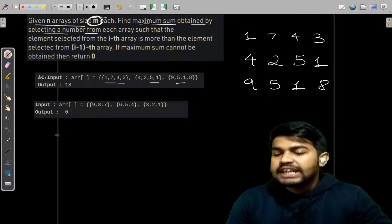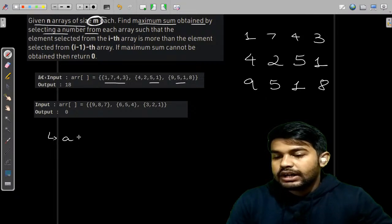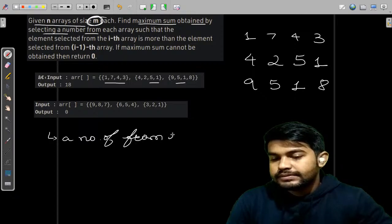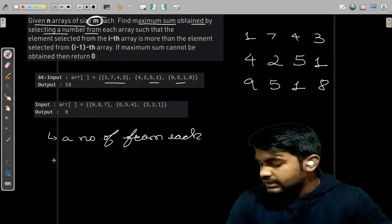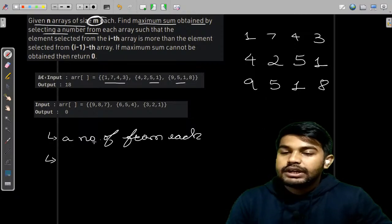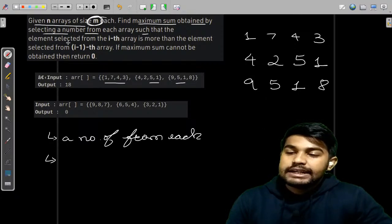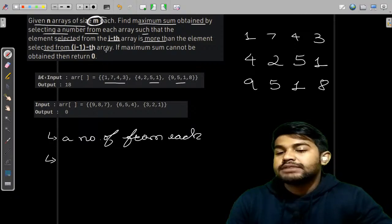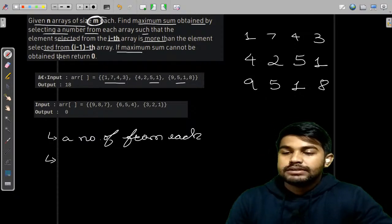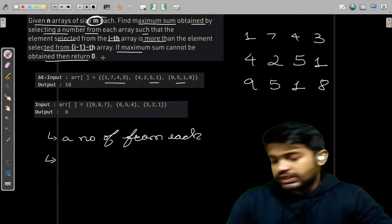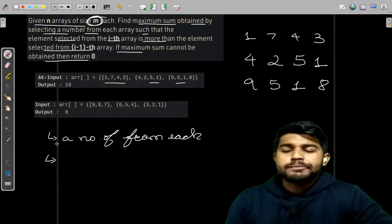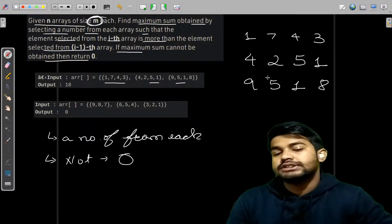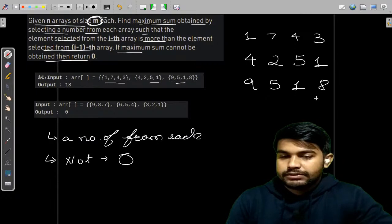Find the maximum sum obtained by selecting a number from each array, such that the element selected from the i-th array is more than the element selected from the i-1-th array. If the maximum sum cannot be obtained then return 0. So if it is not possible we need to return 0. If it is possible we need to return that sum.